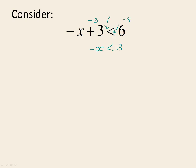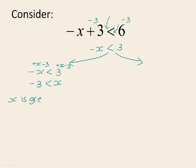At this point we need to be very careful because our x has got a negative coefficient. There are actually two different ways you might go about solving this problem. The first option is to keep the inequality sign exactly as it is, add x to both sides to get it positive, then subtract 3 from both sides. That gives you x is greater than negative 3.